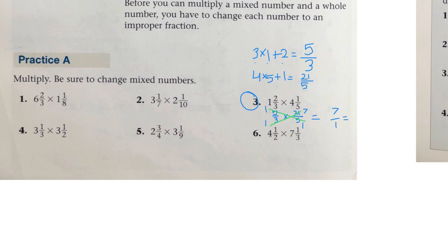Any number with a denominator of 1 is the numerator. In this case, 7. That's the same thing as saying 7 divided by 1. How many 1's go into 7? 7 of them. So that's how you can do practice A.